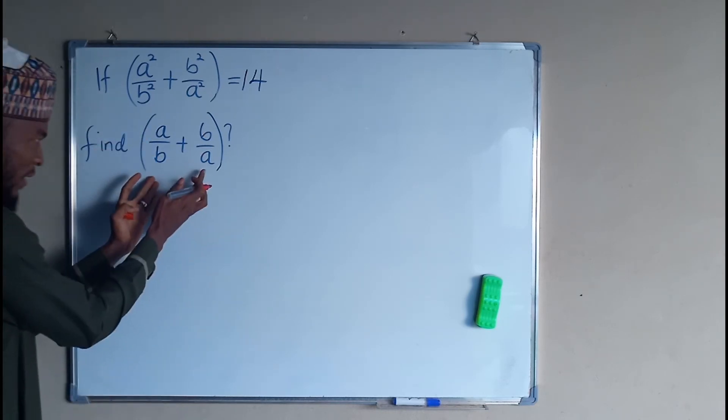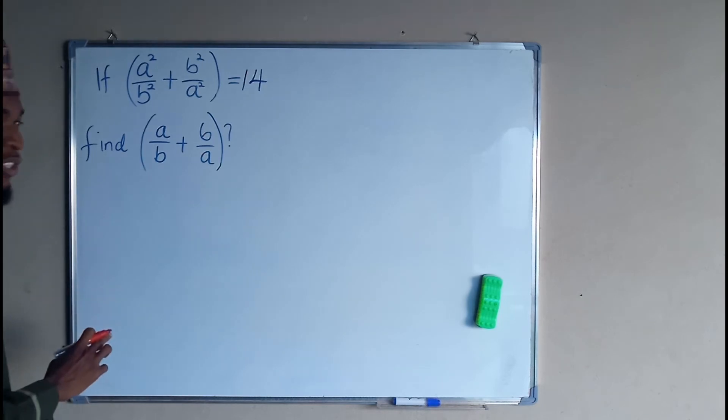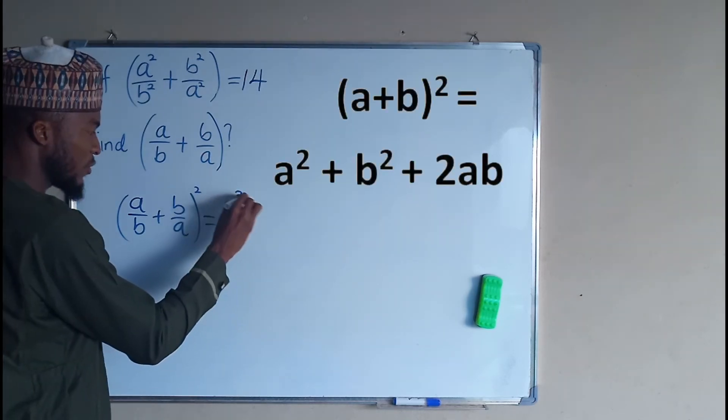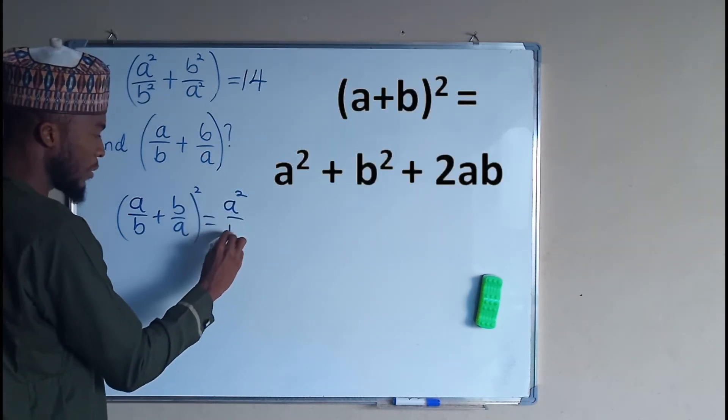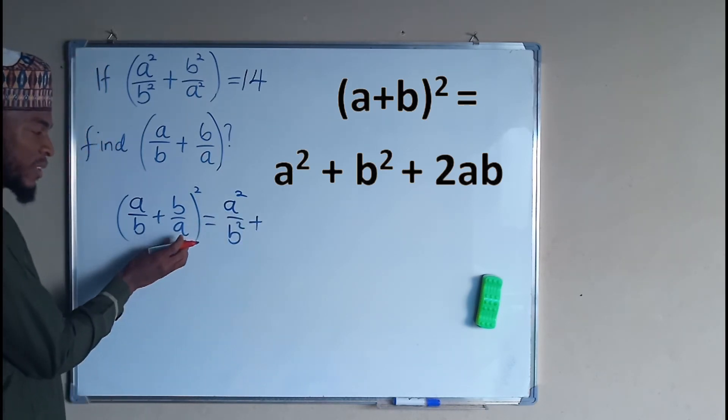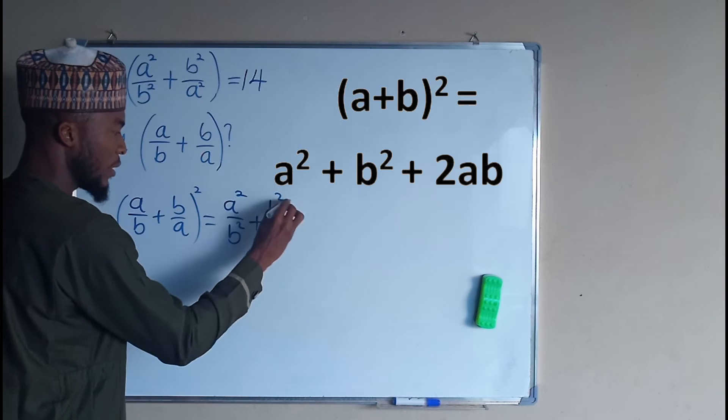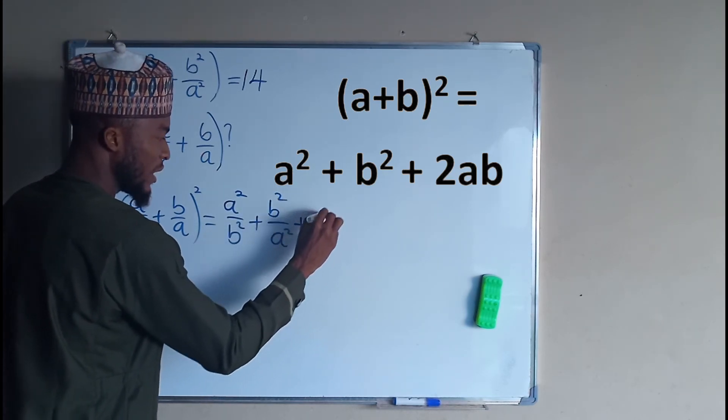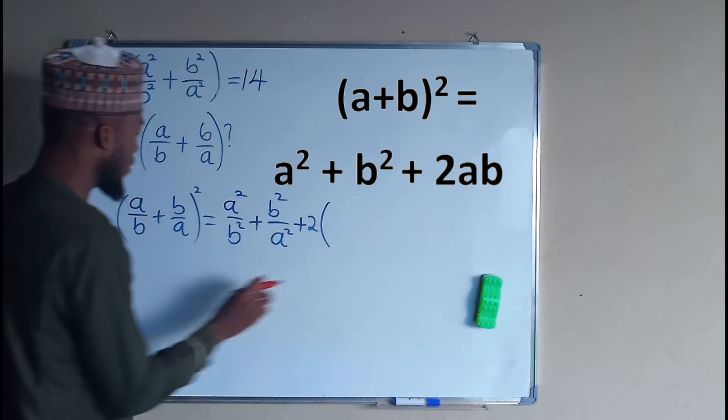Let us square this quantity here and see the result. Using binomial expansion, you can use whatever method you wish. a² divided by b² for the first term, then plus, you square the second term, which is b² divided by a². And plus 2 times the first term and the second term.